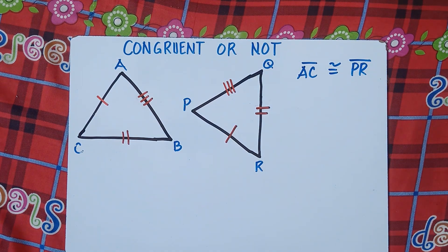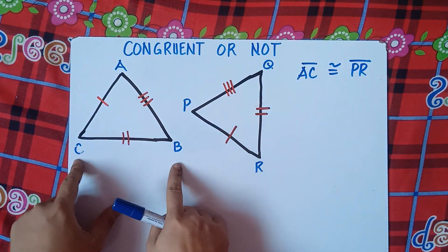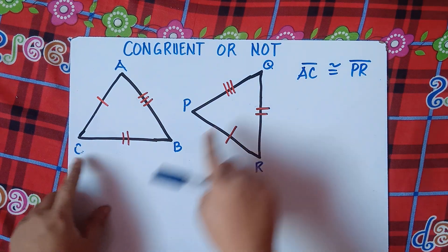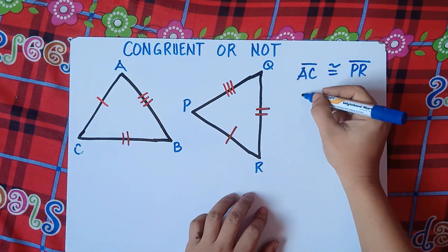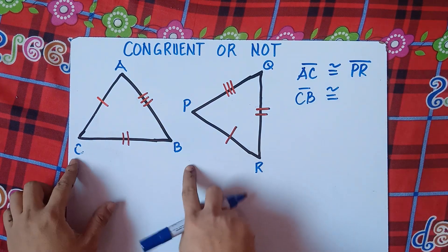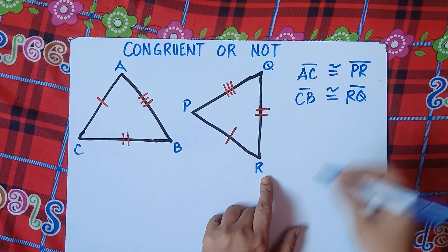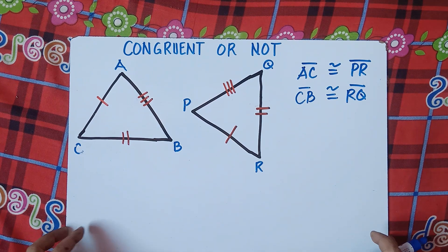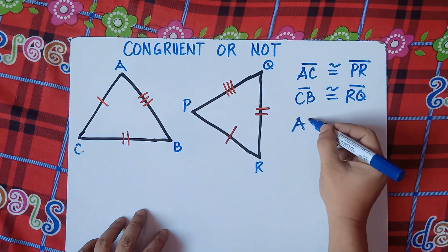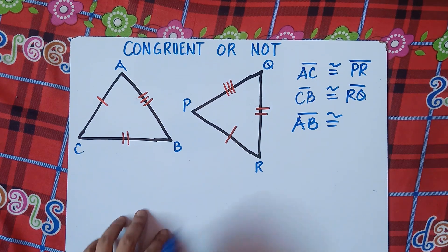We can also say that CB is congruent to RQ — segment CB is congruent to segment RQ. And what else? Segment AB is congruent to segment PQ.